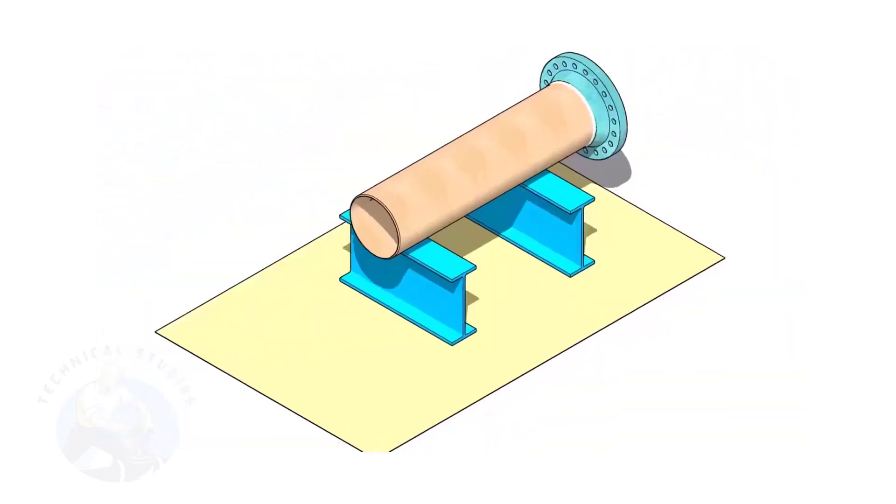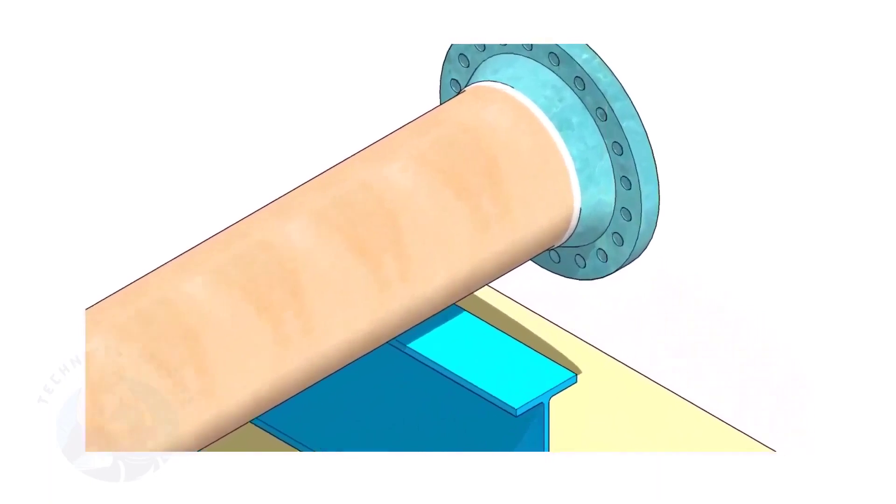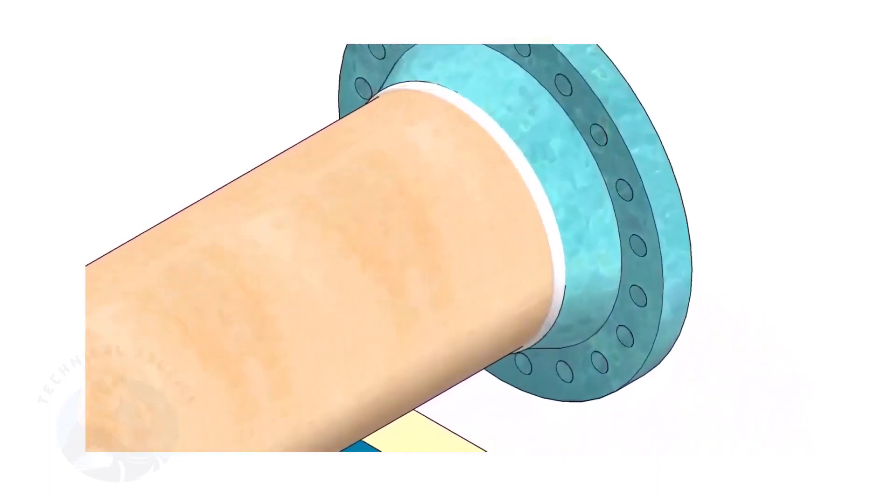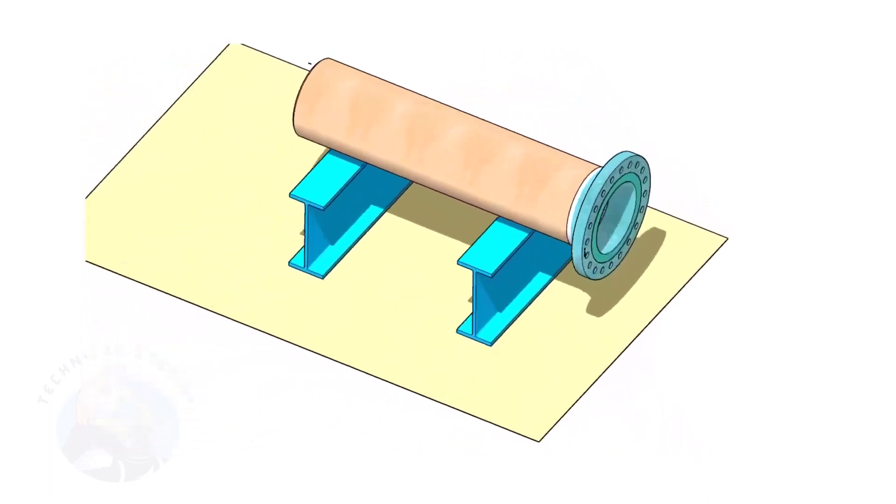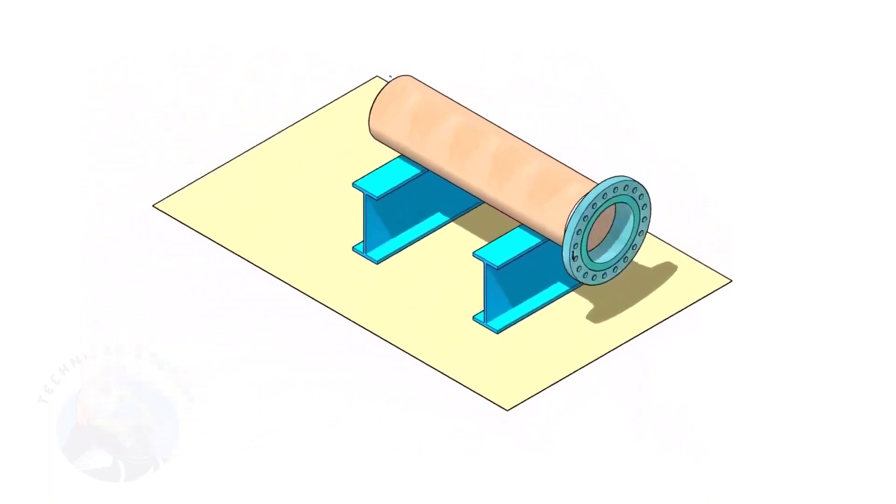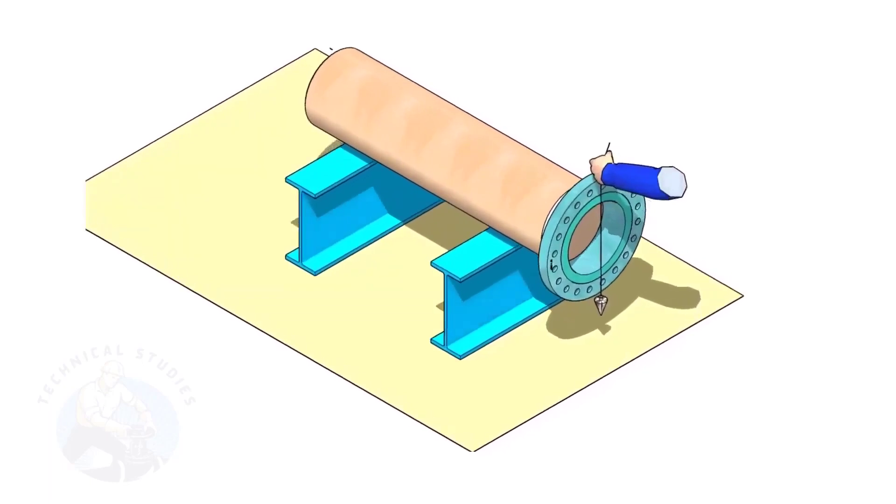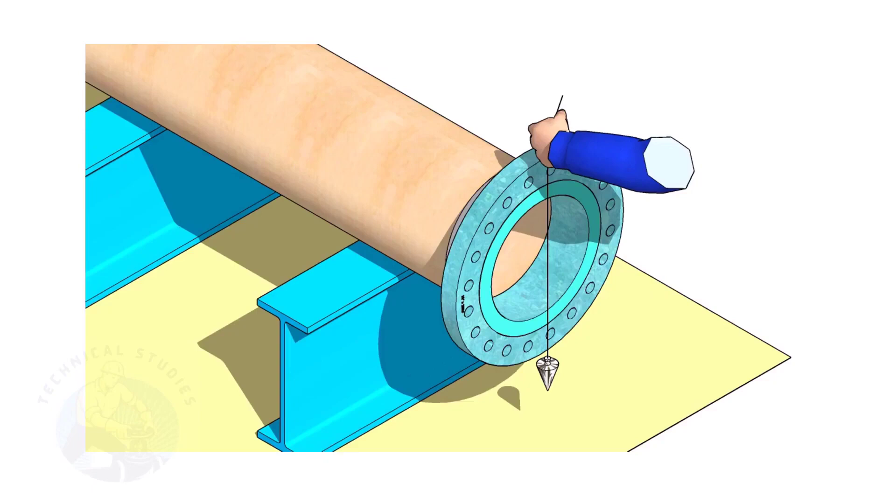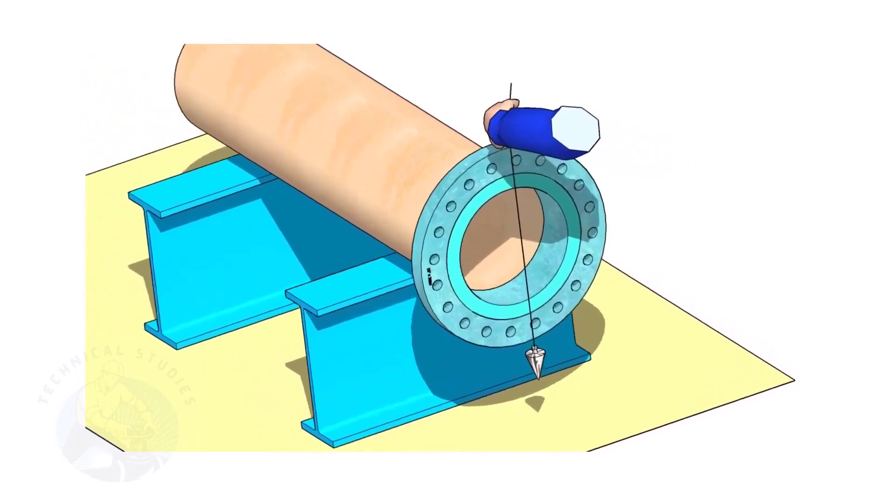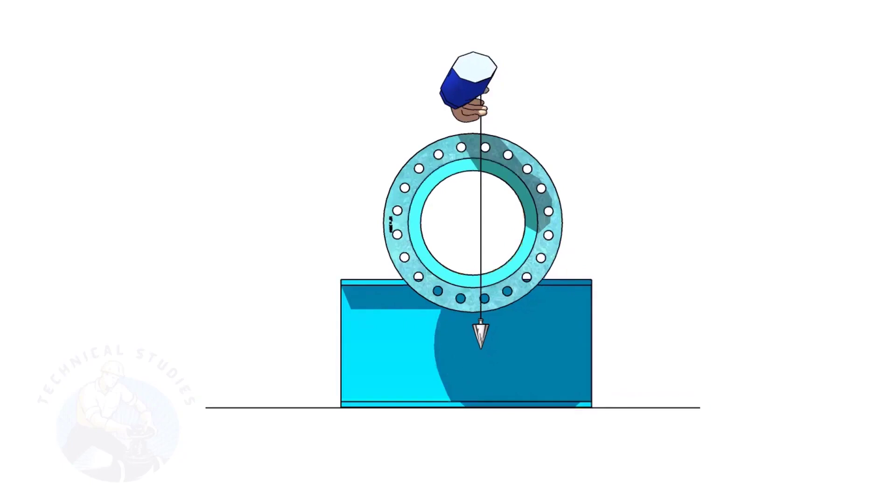Assume that the flange is welded to the pipe. Put the spool on suitable supports. Correct the plumbness of the flange. Choose a set of holes closer to the center of the flange. This will ensure more accuracy.